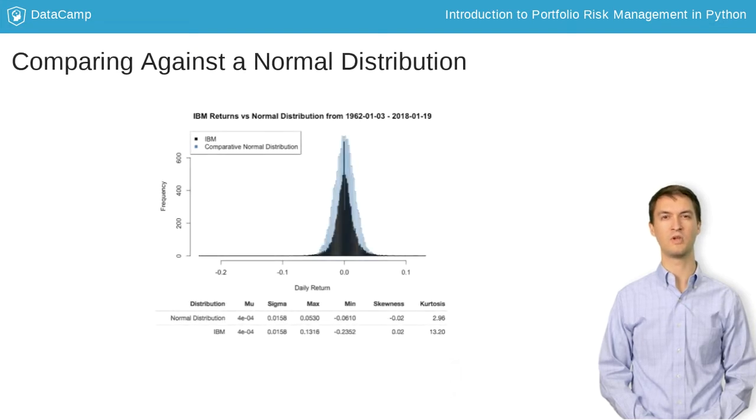Here, we compare the daily returns of IBM stock with a sample from the normal distribution with the same mean and standard deviation. There are statistical tests for normality such as Shapiro-Wilk and Jarque-Bera, but a high kurtosis or large skewness is a simple indicator of non-normal returns.